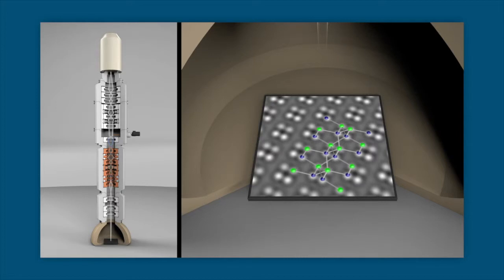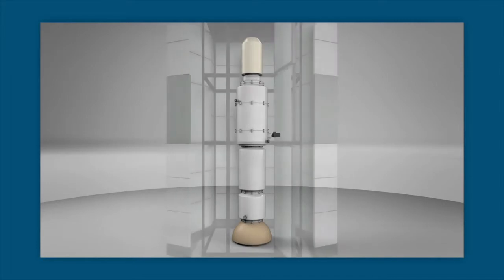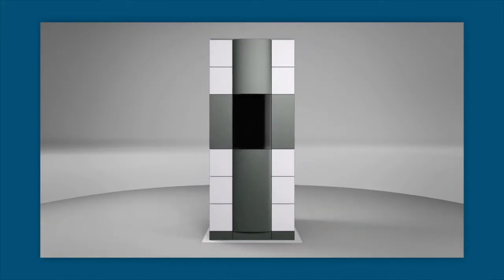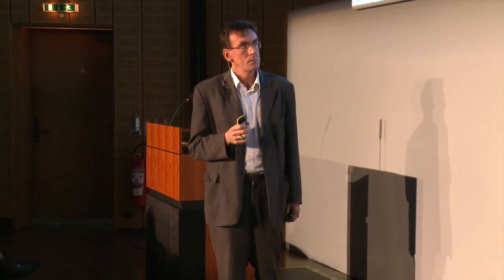These advances in electron microscopy are real breakthroughs. They also impose quite strict requirements on the stability of the microscope column, on the stability of the frame around the microscope, and on the stability of the building that houses it. Some of these improvements become apparent if we look at how images acquired with transmission electron microscopy have evolved over the last 15 or 20 years.